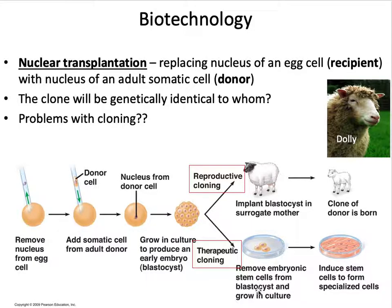Now for biotechnology. This all comes from a process called nuclear transplantation — taking the nucleus of one cell out and transplanting a new nucleus into that cell. From nuclear transplantation you can get reproductive cloning, where you get the birth of a new organism, or therapeutic cloning, where you harvest stem cells and induce them to become other types of cells, used for repair or replacement of damaged tissues or organs.